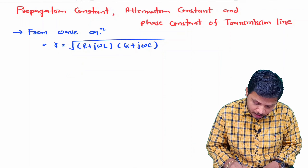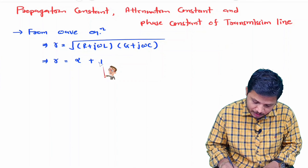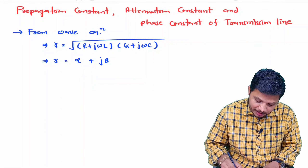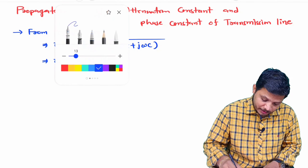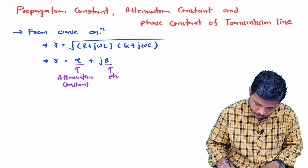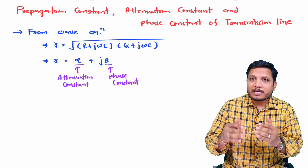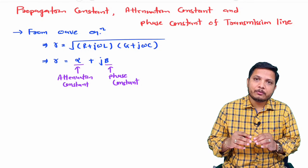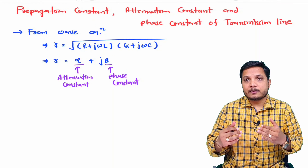Gamma is the propagation constant, and its value is the square root of (R + jωL)(G + jωC). One should know that the propagation constant is a combination of attenuation constant and phase constant, where the real part indicates the attenuation constant and the imaginary part indicates the phase constant.